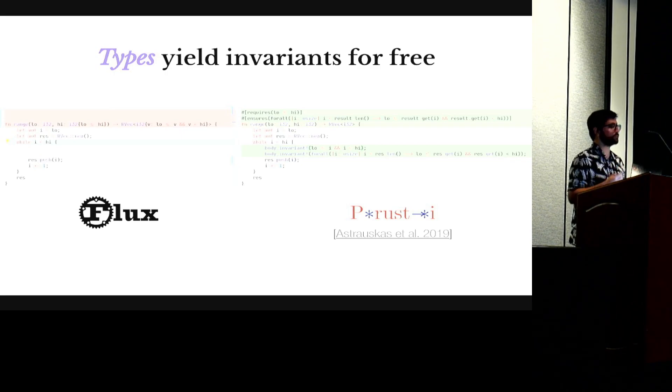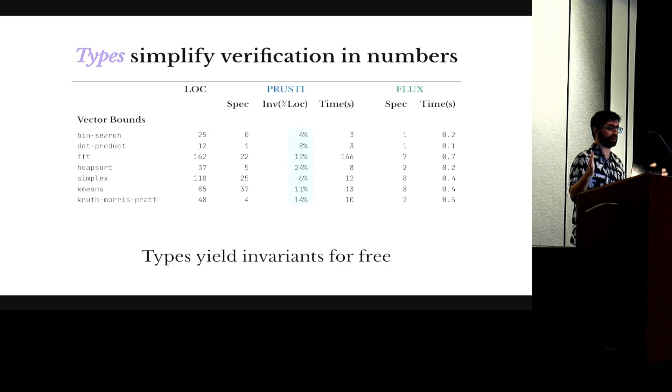And I'm claiming that the reason we can do that is because by not having quantifiers we can easily infer this invariance. So we did a quantitative evaluation of this. And for that we implemented a couple of algorithms that do vector operations. And we verified the safety of vector accesses. So the column I'm highlighting here shows that the lines taken by manually annotated body invariants can be not trivial, like up to 24% in one of the examples. Whereas the column is completely absent in Flux. We don't need any of the invariants for these benchmarks.